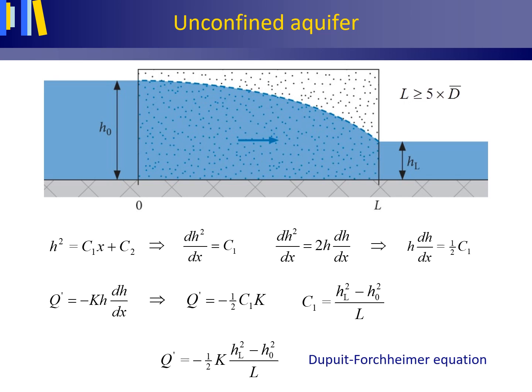Alternatively, and much quicker, we could have differentiated the Laplacian H² equals C1x + C2 to deliver that dH²/dx equals C1. Please remember from an earlier slide that the chain rule teaches us that dH²/dx equals 2H dH/dx and thus that H dH/dx equals ½ C1.